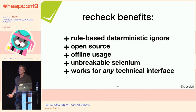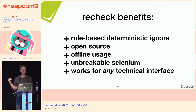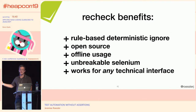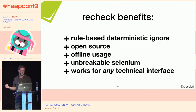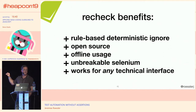To summarize, the benefits of using recheck-web for your project: it's a rule-based deterministic ignore. Instead of an assertion-based approach where you specify what you want checked, now everything is checked unless you specifically say to ignore it — ignore the color, the font, or whatever isn't important to you. It's open source, you can just download and use it. It works offline because the golden master is an XML file. And it gives you unbreakable Selenium, which I'll explain. It works for any technical interface, but right now we've implemented it for web.